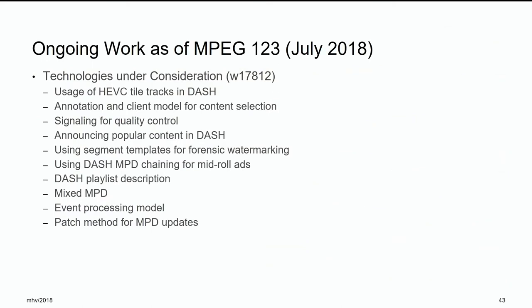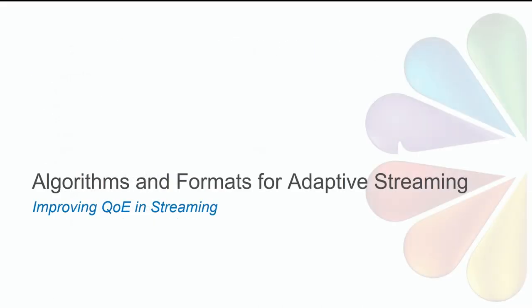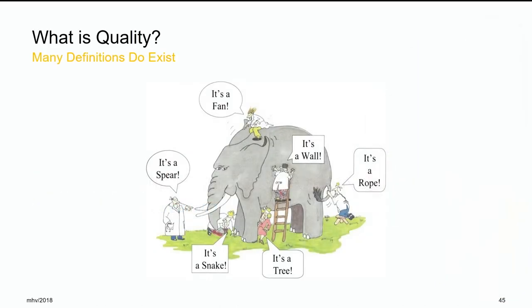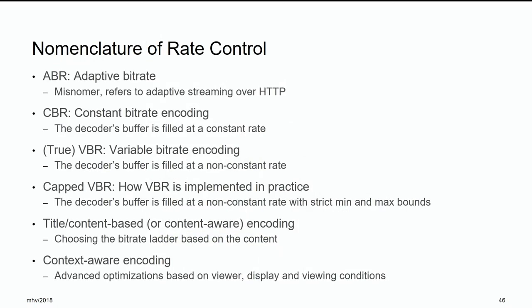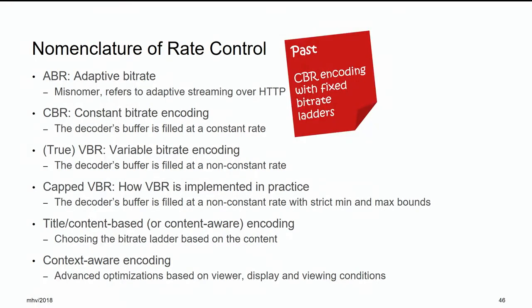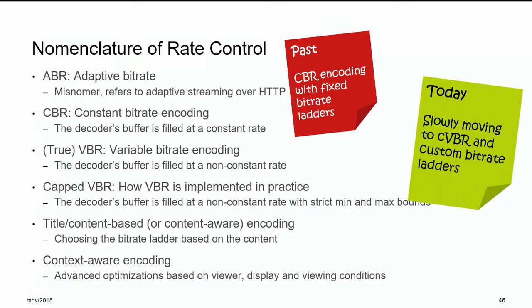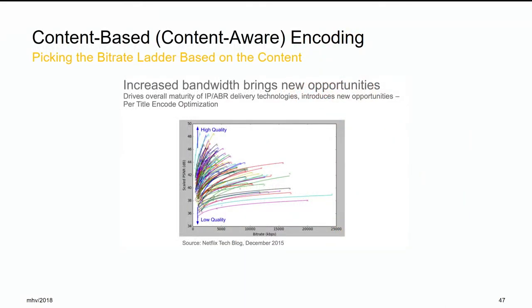A couple of slides on QoE. Depending on where you're coming from, QoE is an entirely different concept for video coding people, streaming people, and others. There are a lot of encoding modes: ABR, CBR, VBR, CAPVBR, title-based encoding, context-aware encoding. We used to do all CBR — now we're slowly moving to CAPVBR. You'll have some VBR encoding in your content generation which hopefully gives better quality, but dealing with it on the client side is a main issue. The famous Netflix picture shows the importance of title-based encoding — not every content has the same rate-distortion curve, so you really need to pick your bitrate ladder carefully.